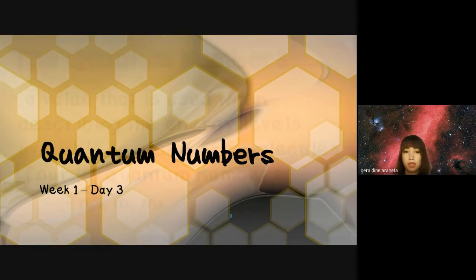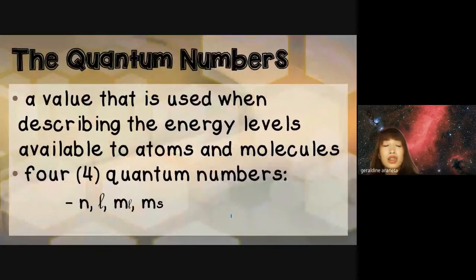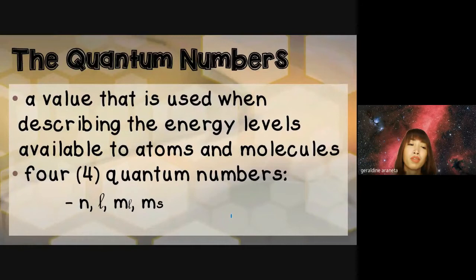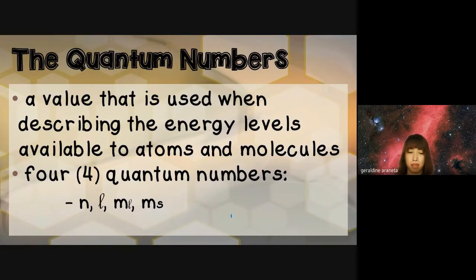Quantum numbers are values that are used when describing the energy levels available to the atoms in molecules. There are four quantum numbers: we have N, we have L, we have M sub L, and we have M sub S.